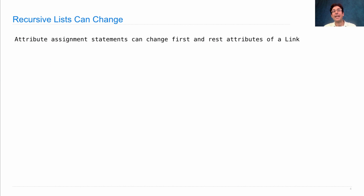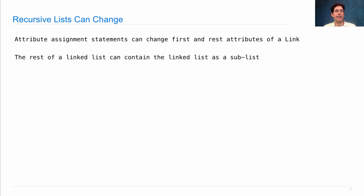Attribute assignment statements can change the first and rest attributes of a link, and the rest of a linked list can actually contain the linked list that you're changing as a sublist.